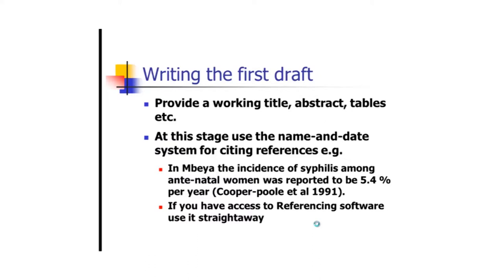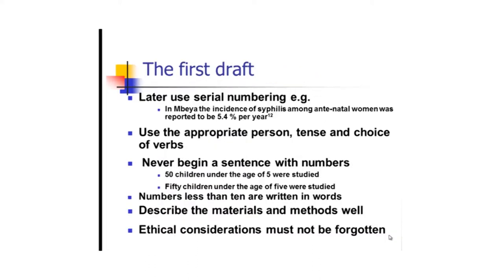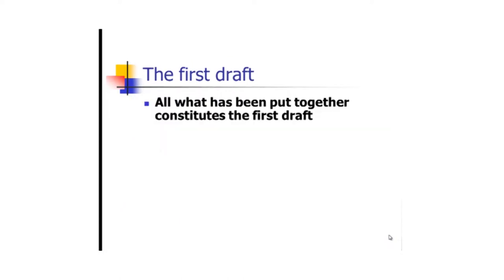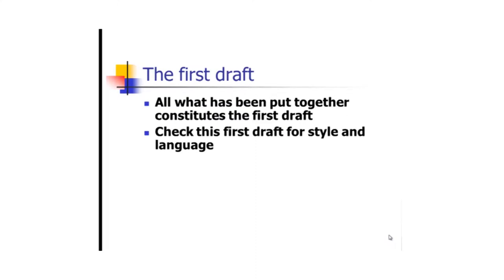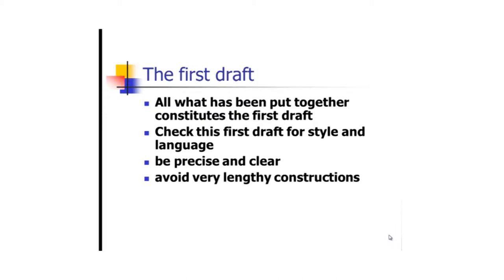We have the first draft, and this first draft contains everything — all the sections, all the illustrations, all the tables. When you have this first draft, you are supposed to check for style and language. Be precise and very clear. Avoid lengthy constructions and avoid verbosity or pomposity.